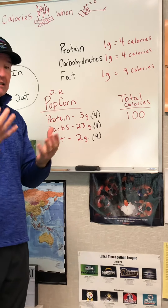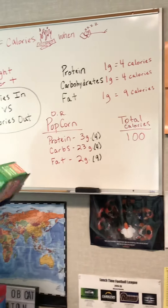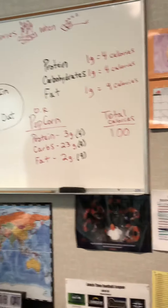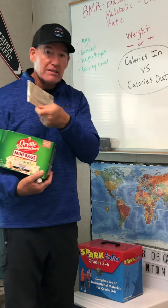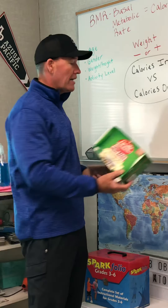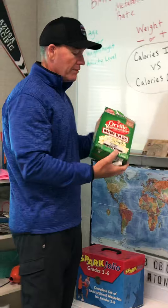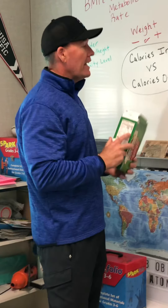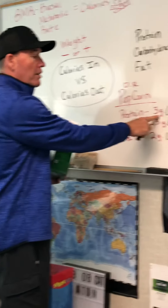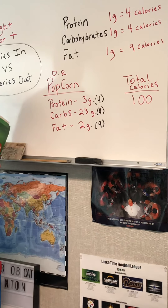Let's see if we can determine how many calories are in one bag of Orville Redenbacher popcorn. This is a particular brand — not all popcorns are the same. Some have more fat, which means they'll have more calories. This one actually has less fat. According to the nutrition label on the box, there are three grams of protein, 23 grams of carbs, and two grams of fat.